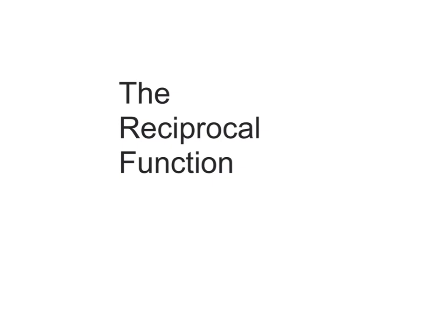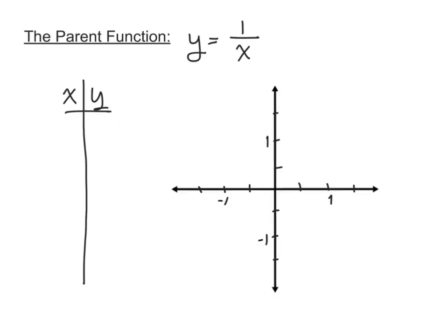The reciprocal function is when we have x in the denominator. So the parent function is y equals 1 over x. To understand what this looks like, we graph it by picking a bunch of x values and finding their y values. We'll pick some nice easy x's. Plugging in 0, y would be 1 over 0, and you can't do that — so that value does not exist.